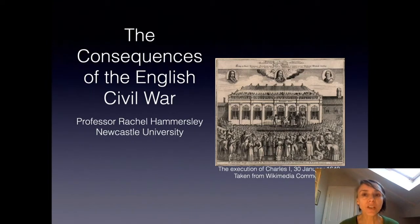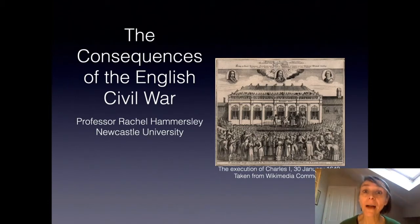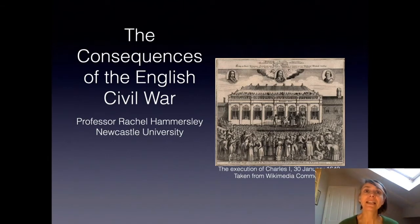In the short term, the execution of the King turned England from a monarchy — a country with a king or queen — into a republic, a country without a monarch. People couldn't agree on how that republic should be organised and throughout the 1650s different systems were tried.